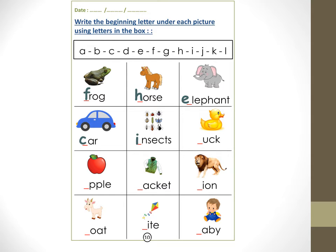D, D — duck. A, A — apple. J, J — jacket. L, L — lion. G, G — goat.